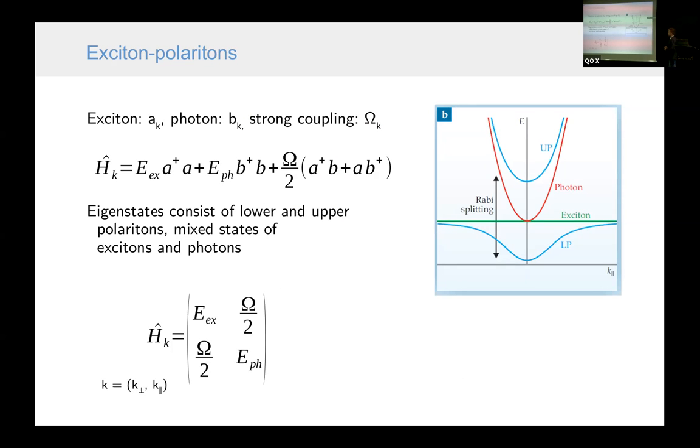Theoretically, one can describe exciton polaritons using this simple Hamiltonian, where we have excitations of excitons, photons, and coupling between them, a simple coupling. If we diagonalize this simple Hamiltonian, we will get two branches, upper polariton branch and lower polariton branch. And in this anti-crossing regime, we will have quasi-particles that are both matter and light excitations at the same time.